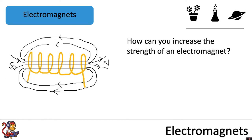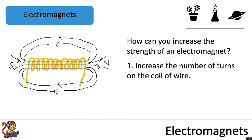So how can you increase the strength of an electromagnet? The first thing you can do is increase the number of turns on the coil of wire. You can see at the moment we have six turns. If we were to increase the number of turns, we would be increasing the strength of the electromagnet.